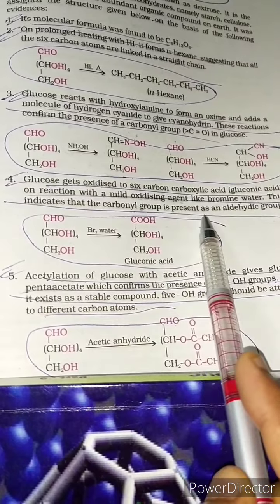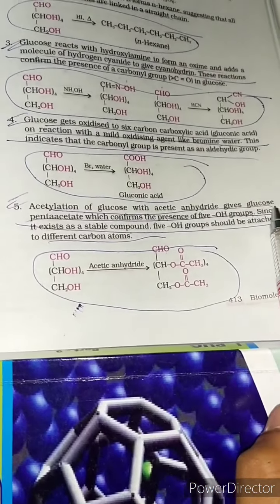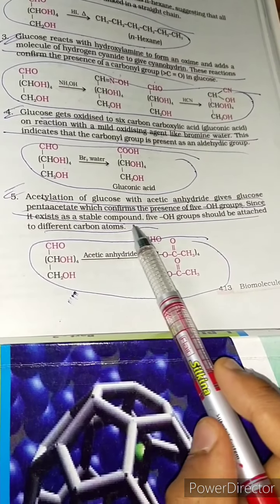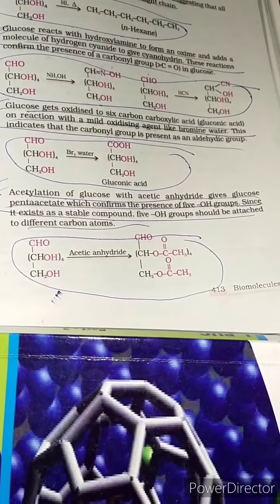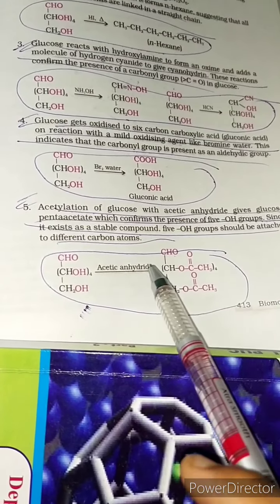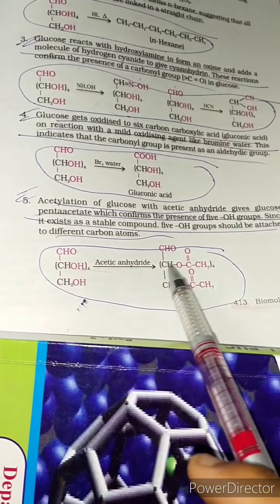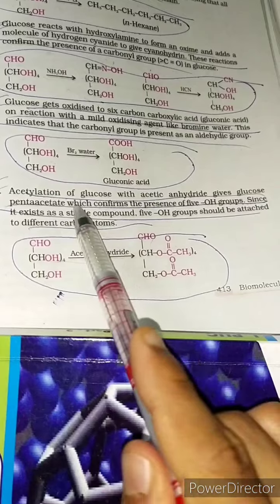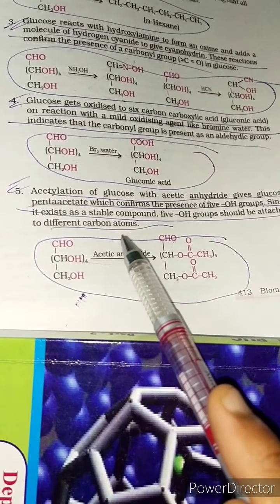Acetylation of glucose with acetic anhydride gives glucose pentaacetate, which confirms the presence of five OH groups. Since glucose pentaacetate exists as a stable compound, the five OH groups must be attached to different carbon atoms.